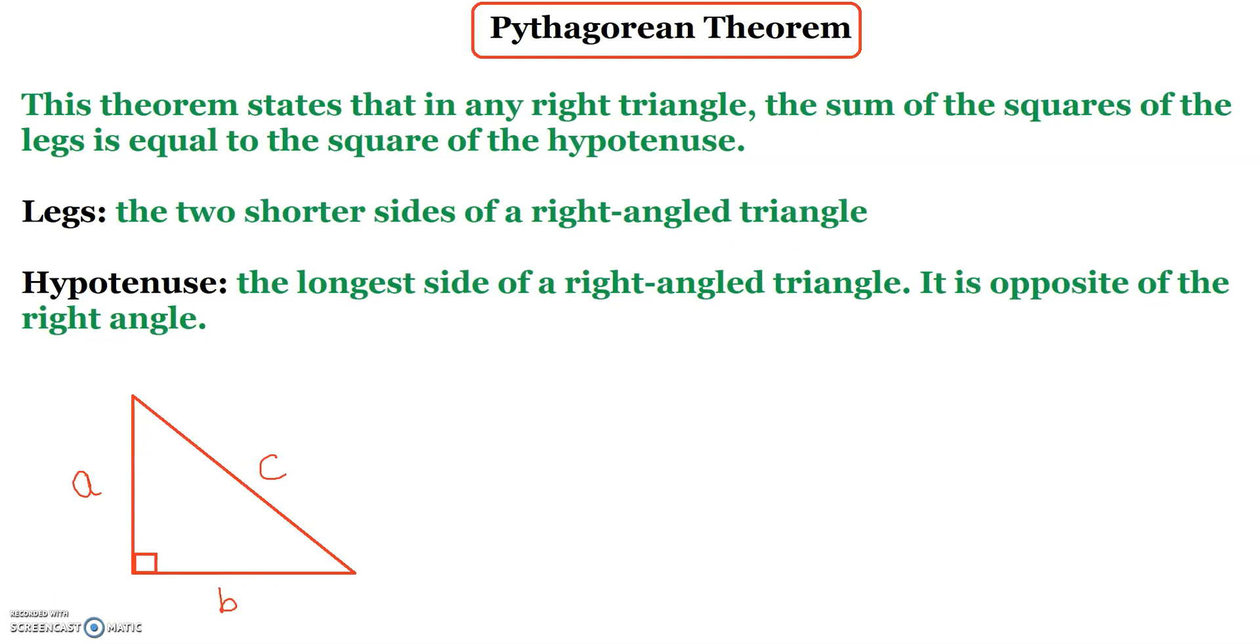We have the first term legs, the two shorter sides of a right angle triangle which is a and b over here in the red triangle. Hypotenuse is the longest side of a right angle triangle. It is opposite of the right angle.